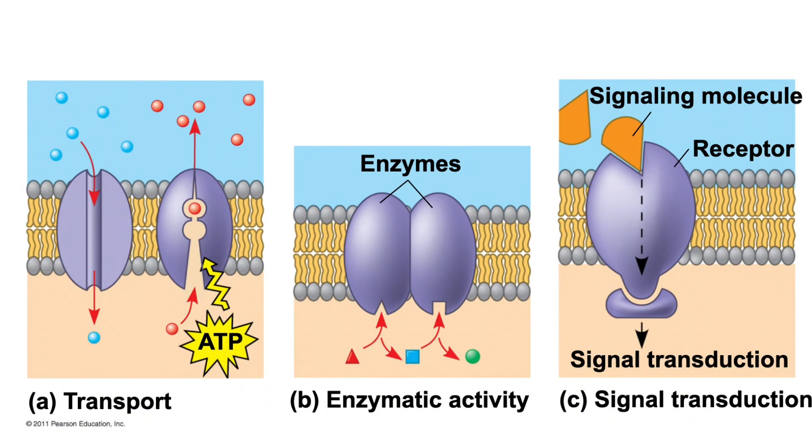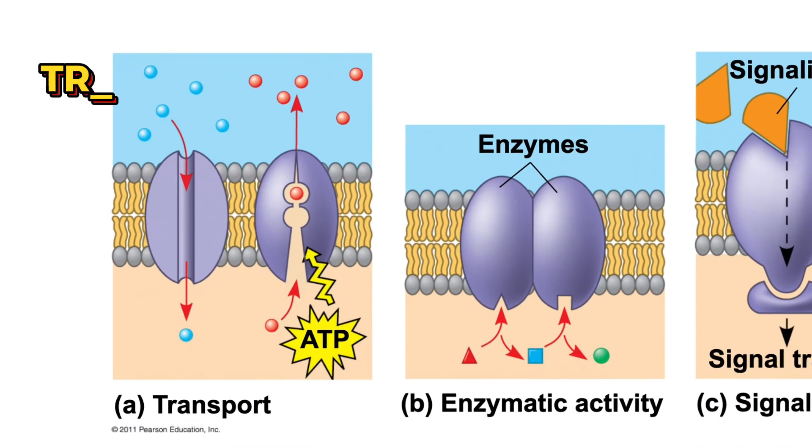There's also this extra bit on different types of proteins embedded into the membrane, but the only one we're going to focus on for this unit is transport proteins, which we'll discuss much more in just a few moments. First things first, we need to think about the cell membrane with its phospholipids as a barrier that allows cells to determine what can come in and what can go out.